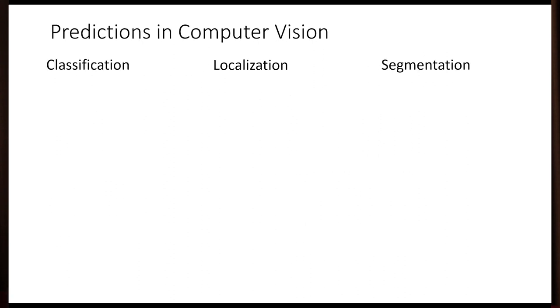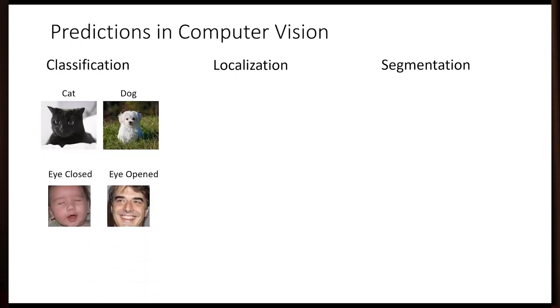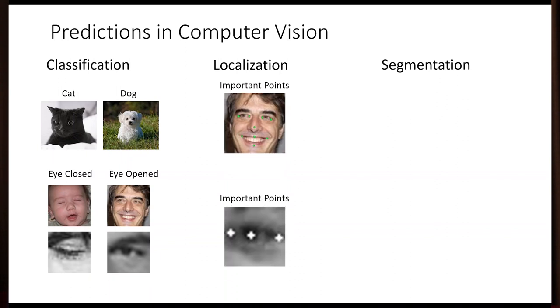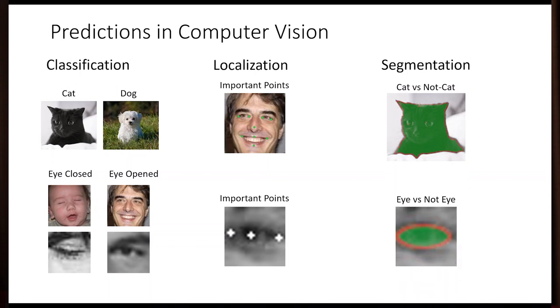Then we talked about computer vision. There are a couple different goals for computer vision. You could do classification, where you're trying to identify what's in a picture. You could do localization, where you're trying to identify key points in a picture where you already sort of know what's there. And you can do segmentation, where you're trying to extract a particular entity from an image, figure out exactly where it is and where it isn't.